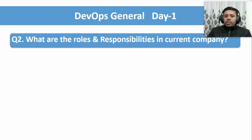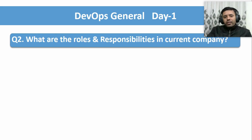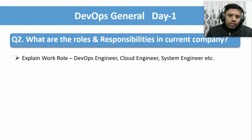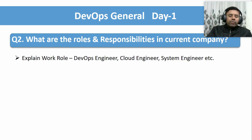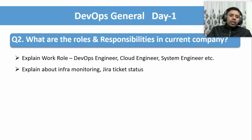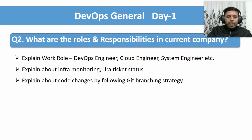The second question is: 'What are your roles and responsibilities in your current company?' This is a very common question and you might get it throughout the entire interview process. The thought process behind this question is that the interview panel wants to understand what you are doing in your current organization as day-to-day activities. You can explain your role — as a DevOps engineer or cloud engineer, whatever your role is — and talk about infrastructure monitoring and Jira ticket status as normal day-to-day activities.